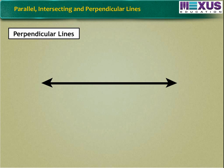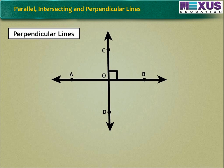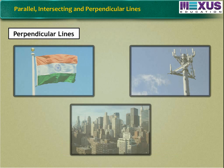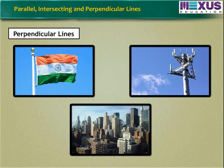In the figure, we see that line AB is intersecting line CD at O forming angle of 90 degree between them. It can be written as AB perpendicular to CD.